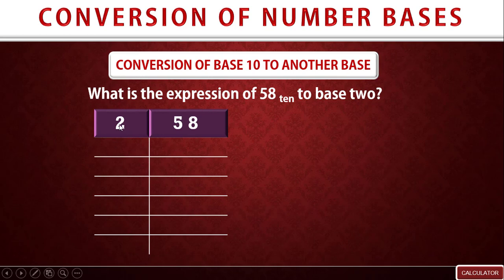Can 2 go into the first digit? The first digit is 5. 2 goes into 5 two times — 2 times 2 is 4, and 5 minus 4 is 1 — so remainder 1.